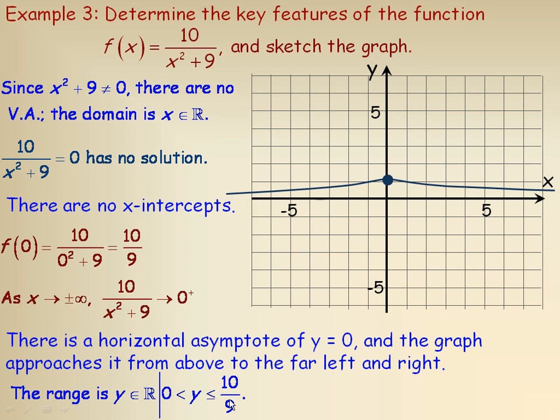Now the range for this function would be the entire set of real numbers, but there's a very small restriction here, narrow restriction. Of course, y has to be greater than zero, but it has to be less than 10 ninths. So the y values are just bigger than zero, but the largest they can be is the 10 ninths. That's the highest the graph goes. So y is greater than zero, but less than or equal to 10 ninths.